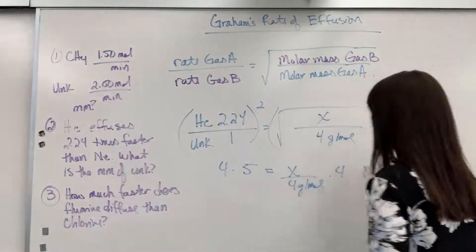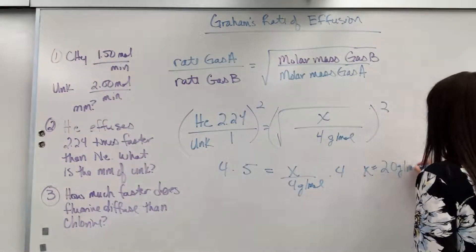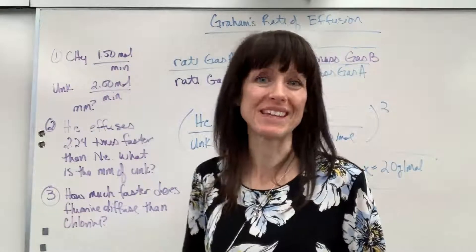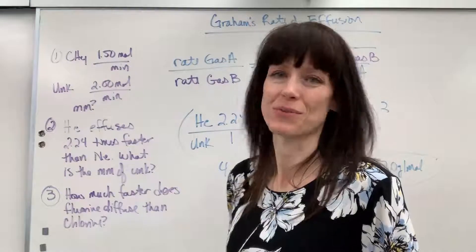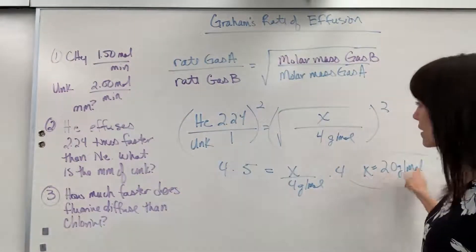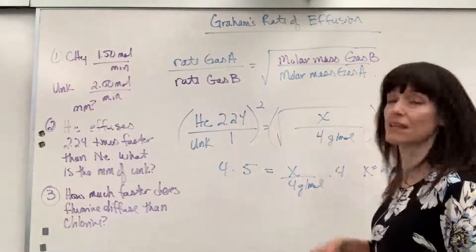And we get x equals 20 grams per mole. So, my unknown is probably going to be neon. Neon has a molar mass of 20.18.